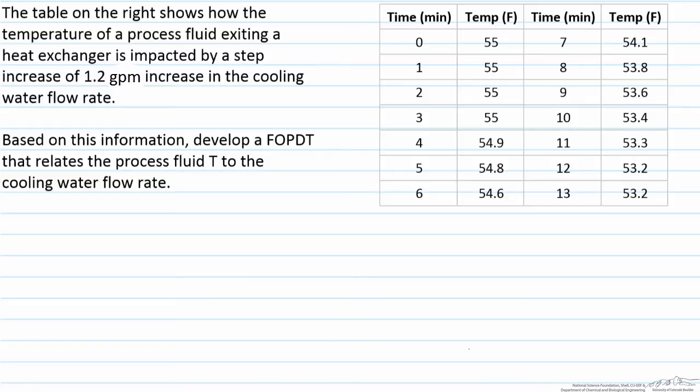First order plus dead time transfer functions are quite important for a couple of reasons. One, in order to analyze the process it's much easier due to its mathematical simplicity in comparison to using a higher order transfer function, so FOPDTs are commonly used to approximate higher order transfer functions, and the second reason is the fact that many control tuning parameter methodologies are based on the knowledge of the FOPDT process transfer function.